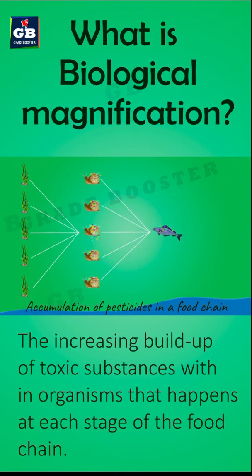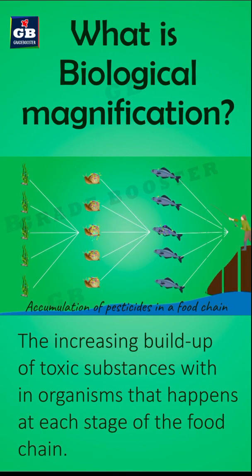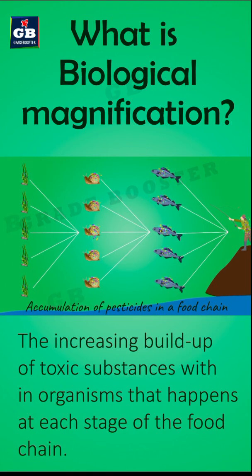Consider the next organism in this food chain is man, who usually stays at the top of the food chain. If a man consumes such contaminated fish in large quantity, all the chemical residues present in the bodies of the fish enter the body of the man.